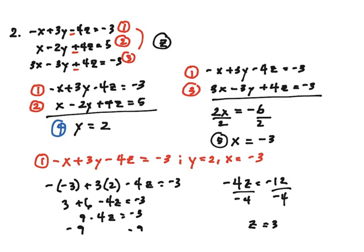Okay, so z equals 3, and then I'm going to go ahead and write it in my ordered pair: negative 3, 2, and 3. And that is my final answer. Good job guys!